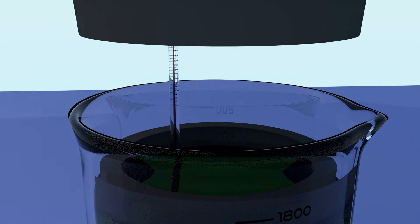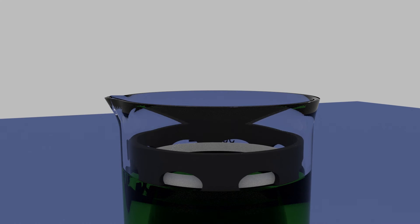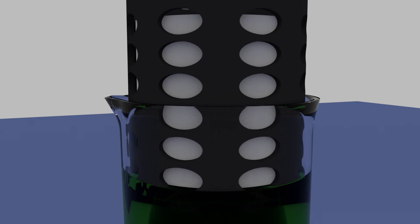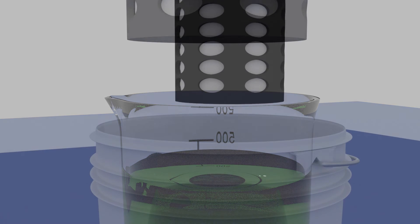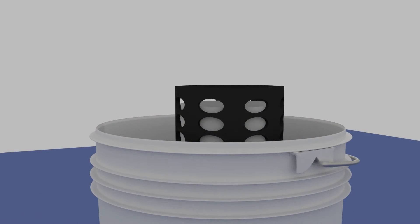Remove the cap. Slowly lift out the basket with filter pouch, allowing it to drain. You can rest the basket in a bucket or any other plastic or glass receptacle.